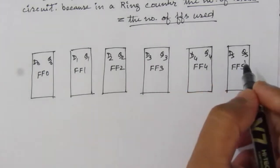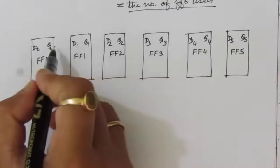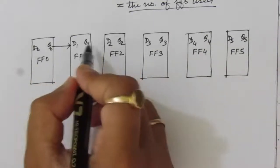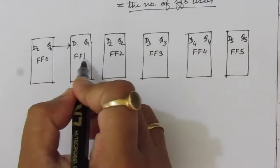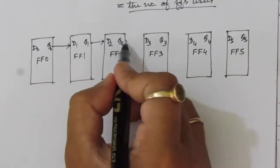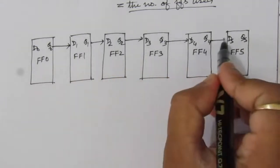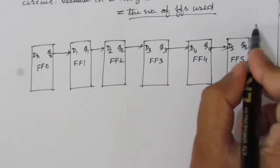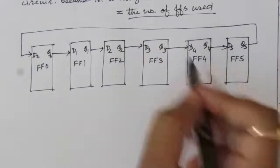For designing this ring counter, the first flip-flop output is connected to the second flip-flop input. Similarly, flip-flop 1 output is connected to flip-flop 2 input, and so on for all the other flip-flops. The last flip-flop output is connected back to the first flip-flop input. This forms the ring counter. We apply a synchronous clock signal to all flip-flops.